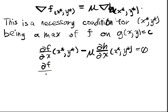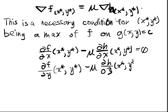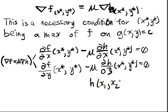df/dy now at x star, y star minus μ dh/dy at x star, y star is equal to 0. So these are the constraints implied by the gradient of f is equal to μ times the gradient of h. I'm just splitting it up into the two components. And also I have this equation h(x1, x2) minus c is equal to 0.